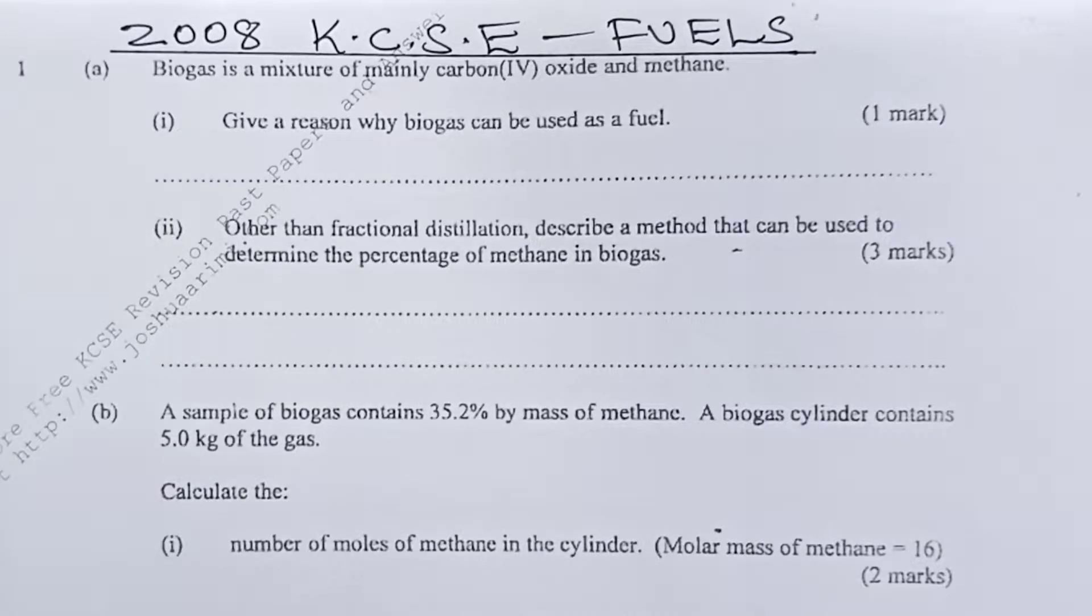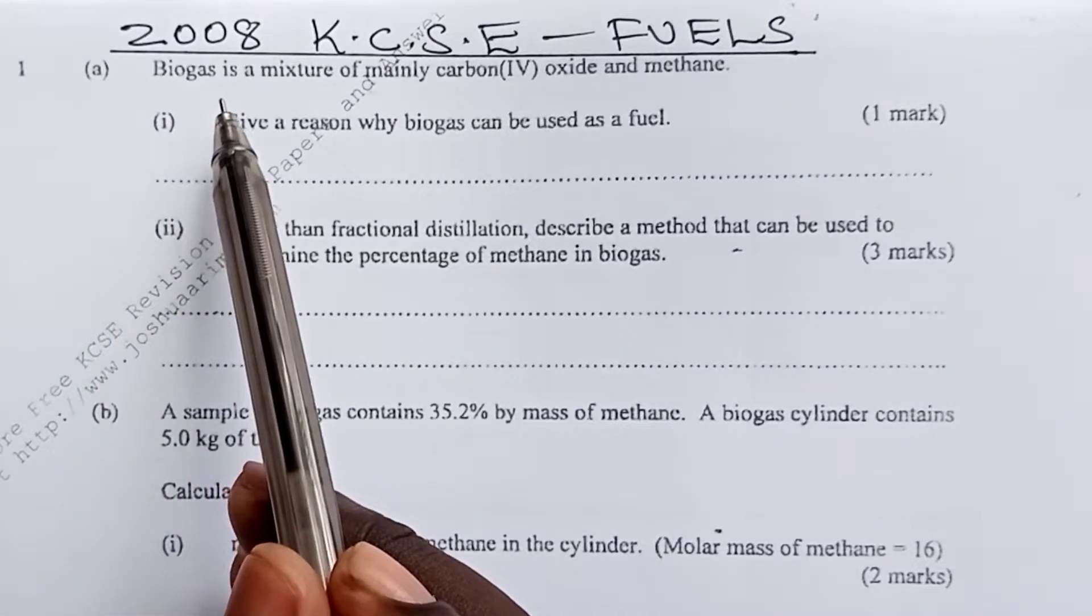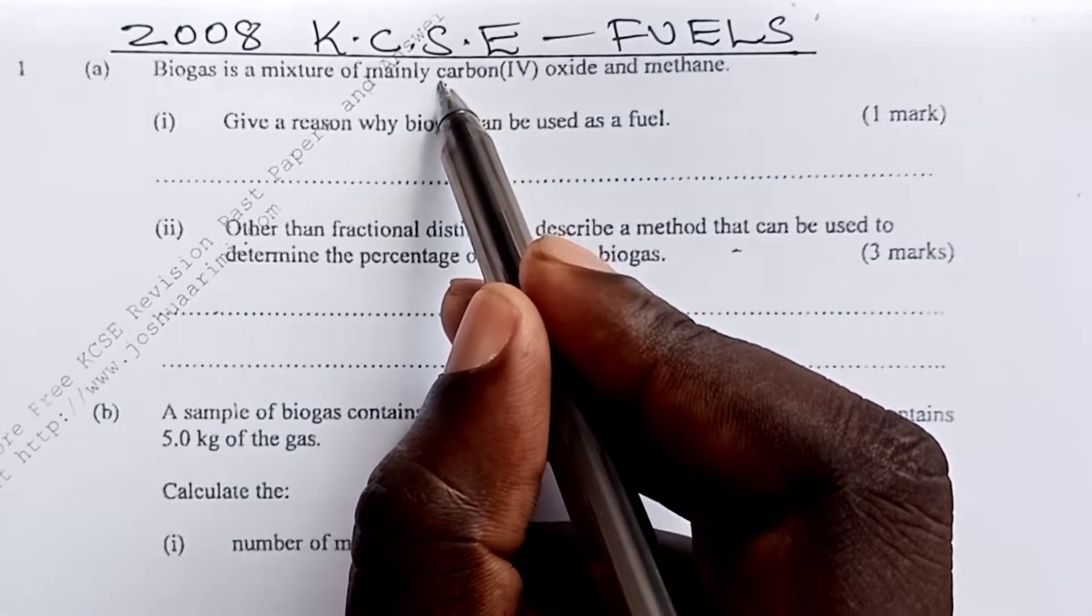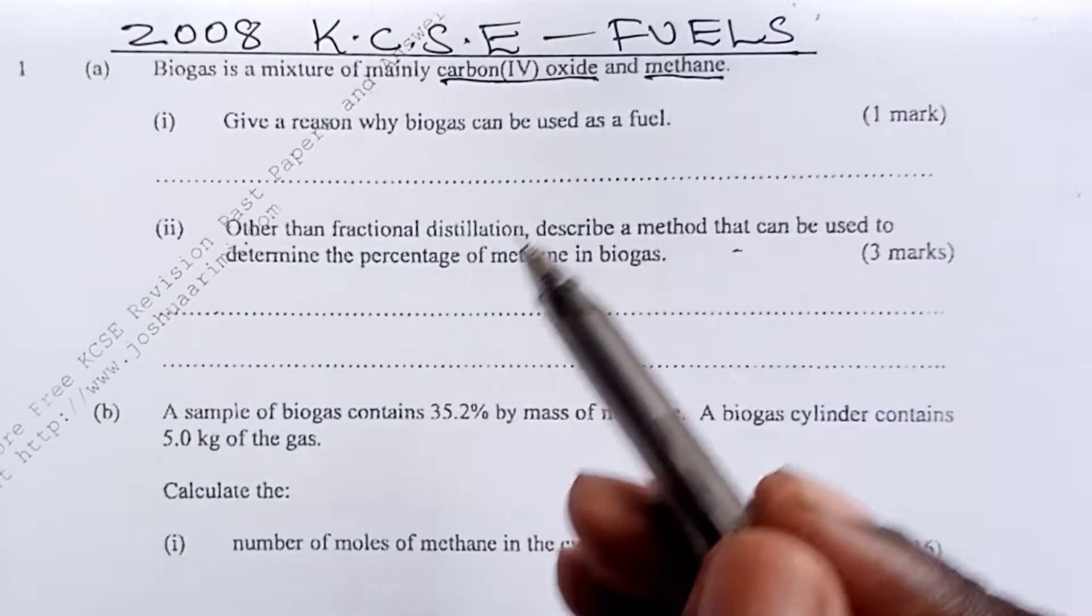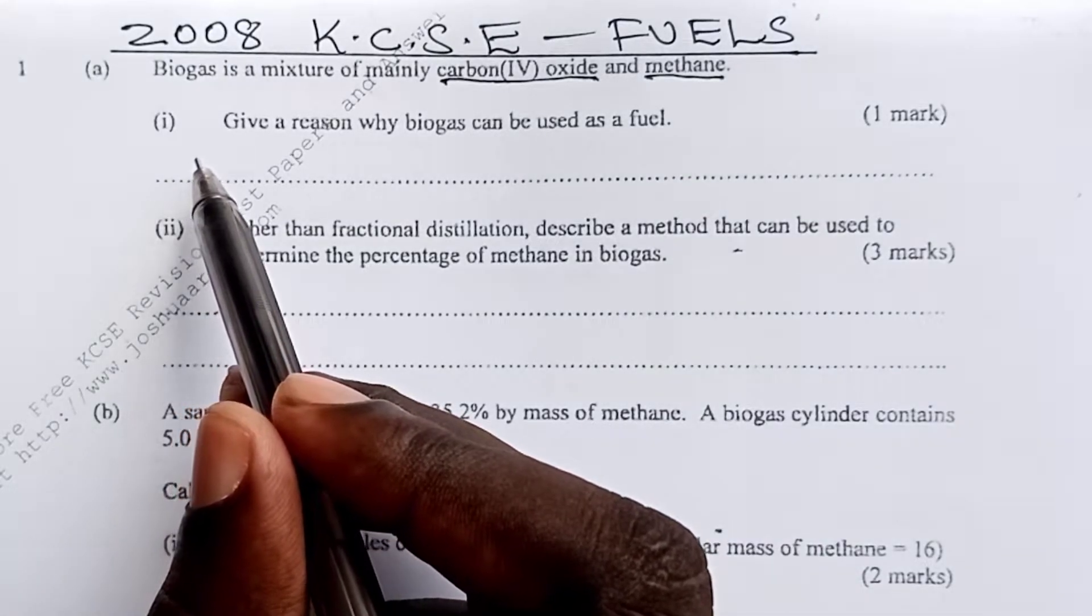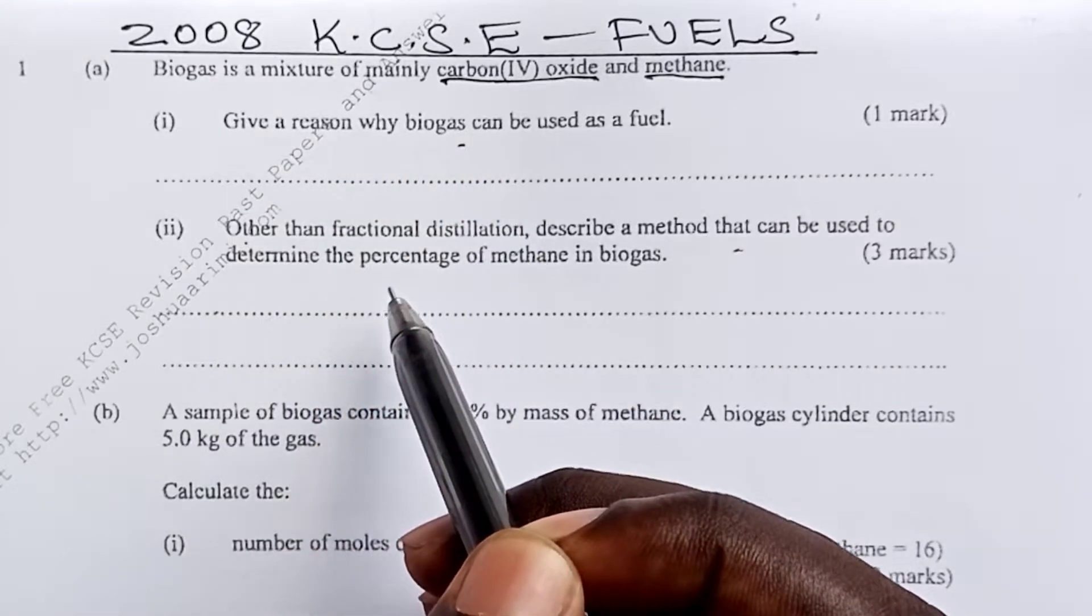Greetings. 2008 KCSE Chemistry Paper 2, Question number 1 on Fuels. Part A: Biogas is a mixture of mainly carbon-4 oxide and methane. Part 1: Give a reason why biogas can be used as fuel.